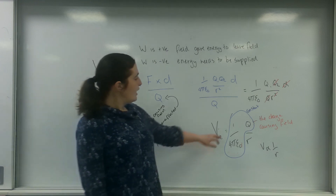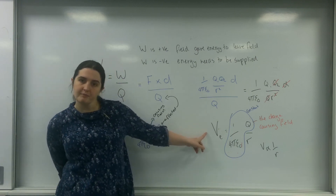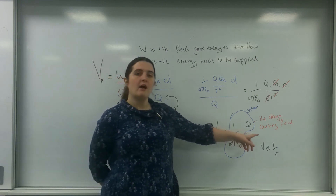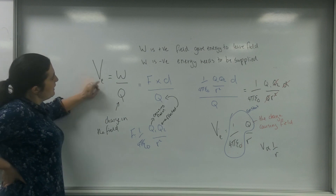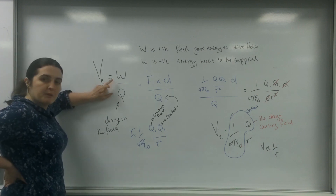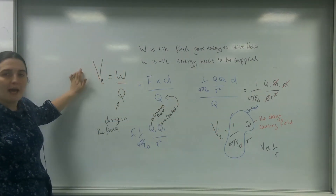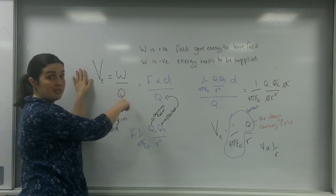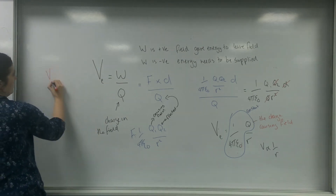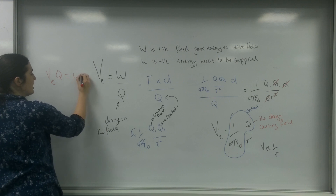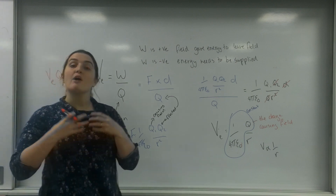Now, if my charge was negative, I would have a negative potential. If my charge was positive, I would have a positive potential. Going back to the energy formula — potential times charge equals energy — if I had a negative charge causing the field giving a negative potential, and the charge in the field was also negative, the energy would end up positive, which means they are repelling.